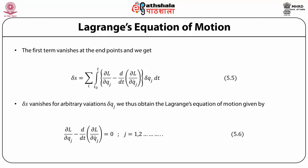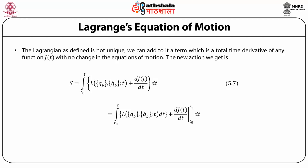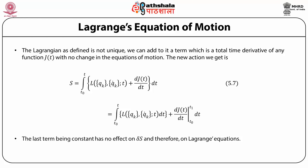These are the Lagrangian equations of motion obtained from Hamilton's principle. The Lagrangian as defined is however not unique. We can add to it a term which is a total time derivative of any function j of t without changing the equations of motion. The action S can be written as the integral of (L + dj/dt) dt, which equals the integral of L dt plus j(t) evaluated between t0 and t. The last term being constant has no effect on the variation δS, and therefore the Lagrangian equations remain unchanged.